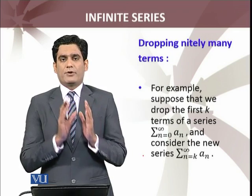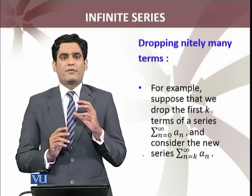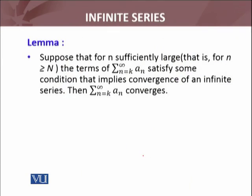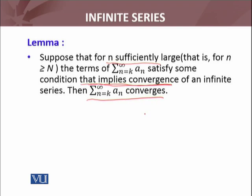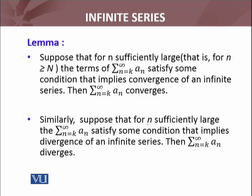Now we come to the point: dropping finitely many terms of an infinite series — does it affect the convergence or divergence? Let us discuss this. There is an important lemma: suppose that for n sufficiently large, that is for n ≥ N, the terms of Σaₙ satisfy some condition that implies convergence. It is very important that we deleted finitely many terms, but the infinite series satisfies the convergence criteria. Then the infinite series obtained after dropping the finitely many terms will converge.